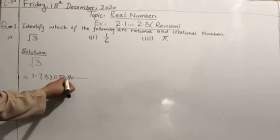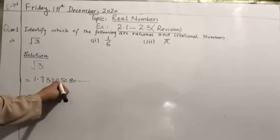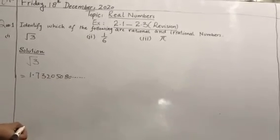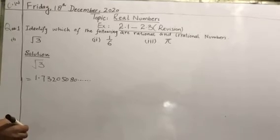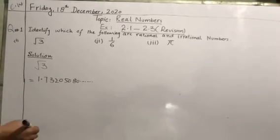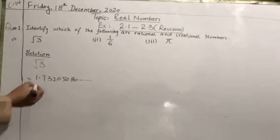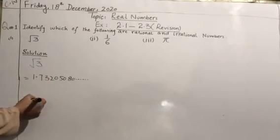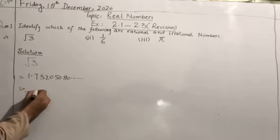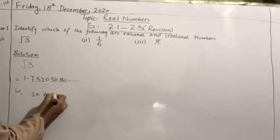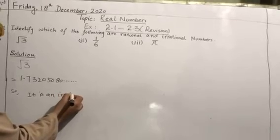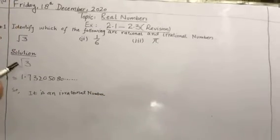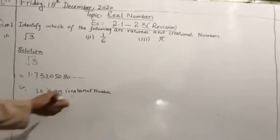The numbers are not repeating, which shows that the fraction is non-terminating and non-recurring. Irrational numbers have two properties: they are non-terminating and non-recurring. By getting this answer we know that √3 is an irrational number.